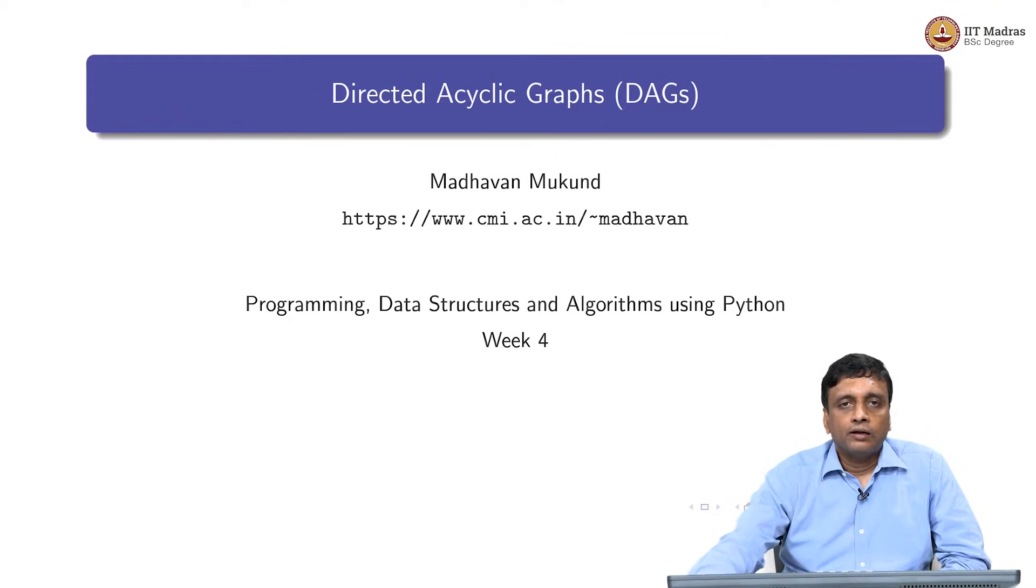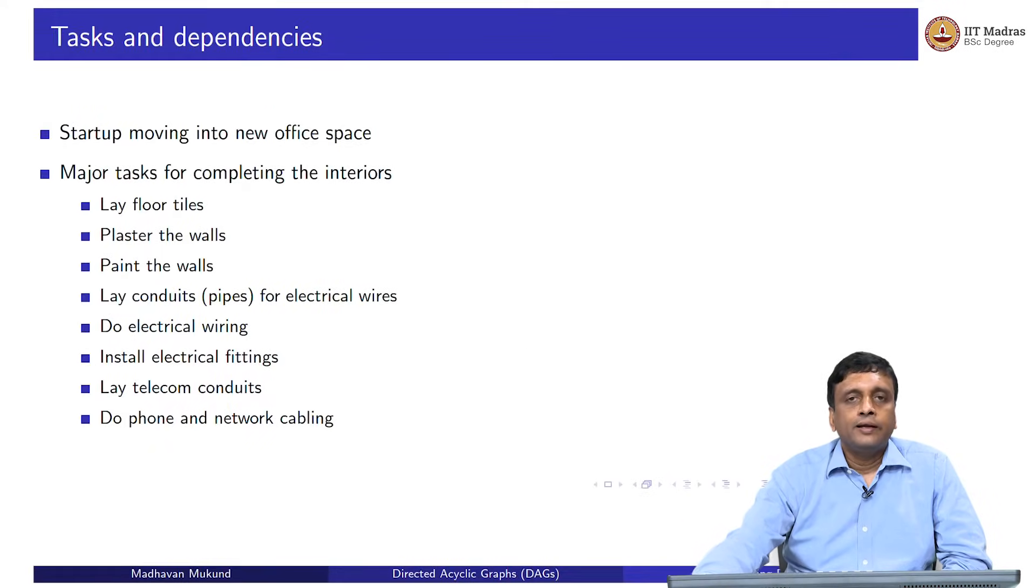Now, there are actually a large class of applications where directed and acyclic graphs are important. Typically, a directed acyclic graph is what you need to represent a set of tasks and their dependencies.